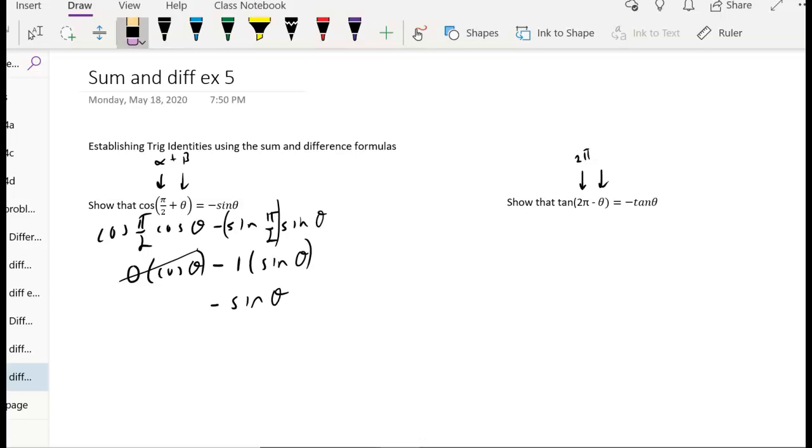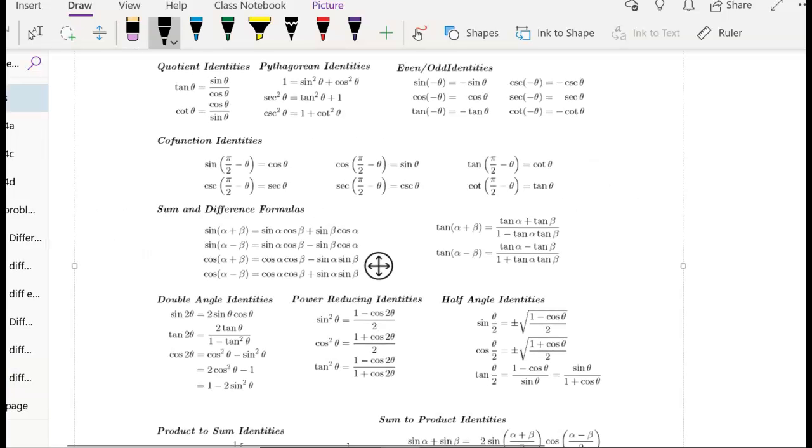The known angle is 2 pi. I'm just going to call that alpha. And the unknown angle, we're going to call that beta, just so we can use the formula. And the tangent of alpha minus beta is this one right here. So we're going to use the minus in the numerator and the plus in the denominator.